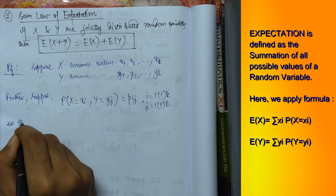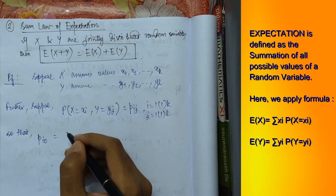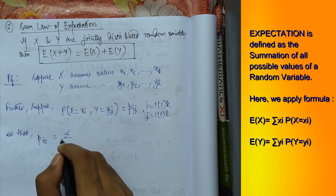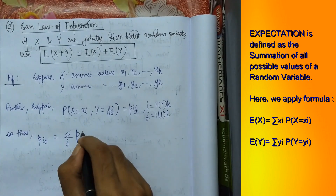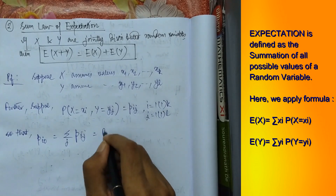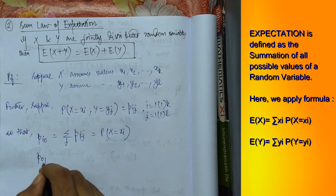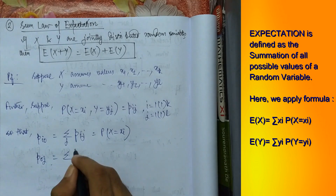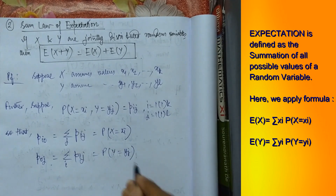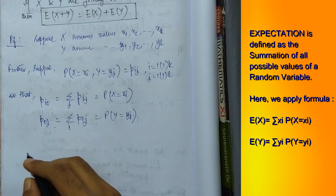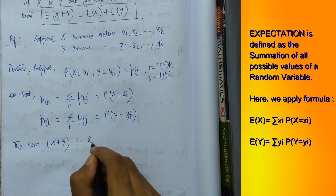We define marginal probabilities: p_i0 = Σj p_ij, which equals P(X = xi) — here i is fixed and j varies in the summation. Similarly, p_0j = Σi p_ij, which equals P(Y = yj). The sum X + Y is also a random variable.